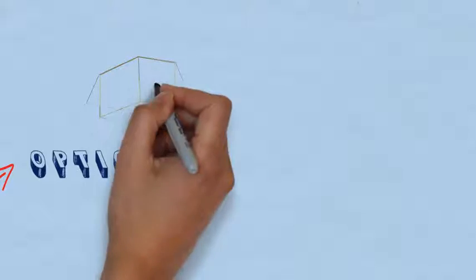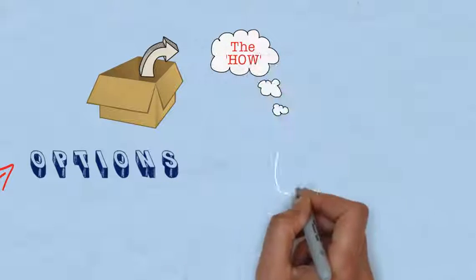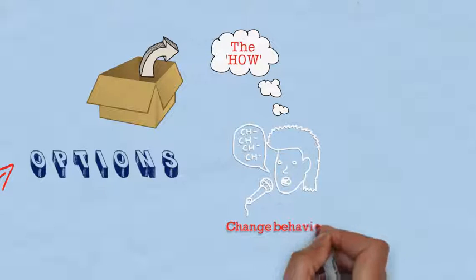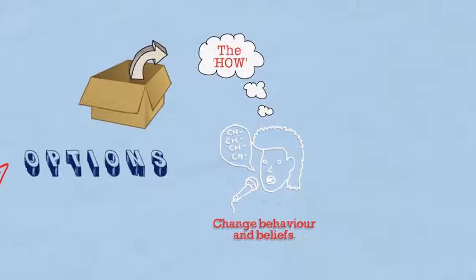Options are the different ways the client could achieve the goal. This stage gives the client support and time to think creatively and differently about how they can achieve their goal. This is crucial if the client is going to change behavior and beliefs. It also provides a powerful and lasting experience of creative thinking.